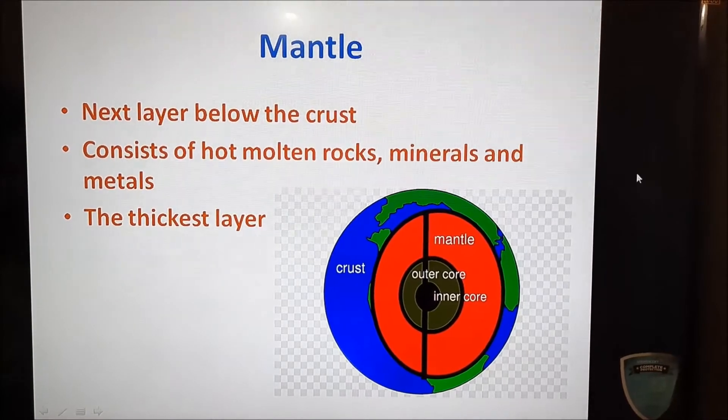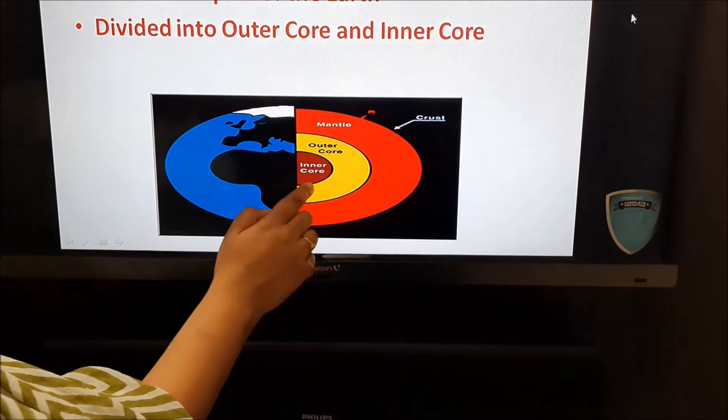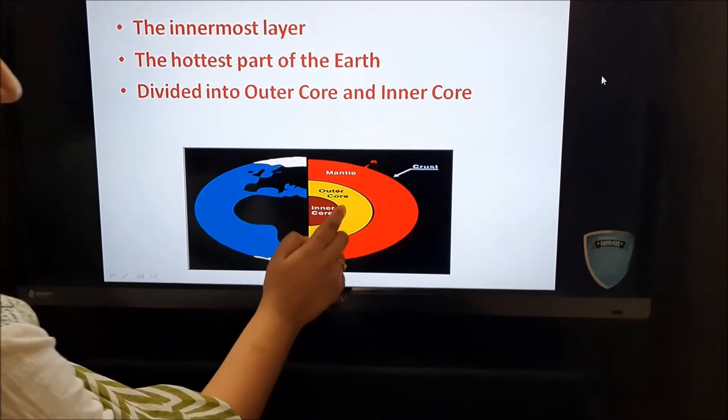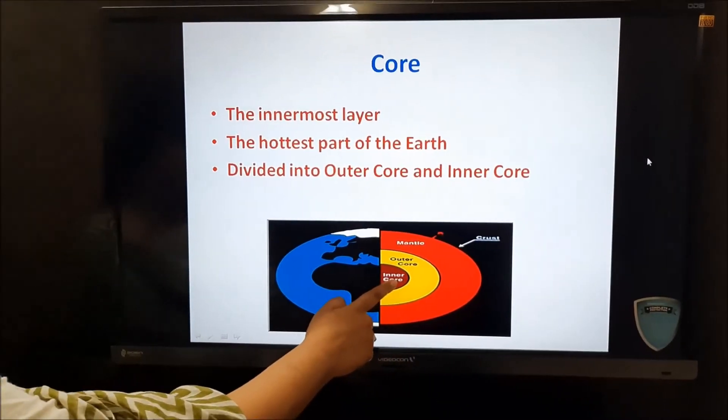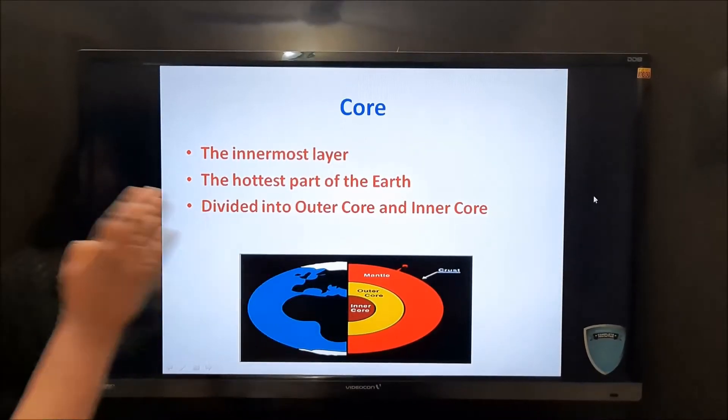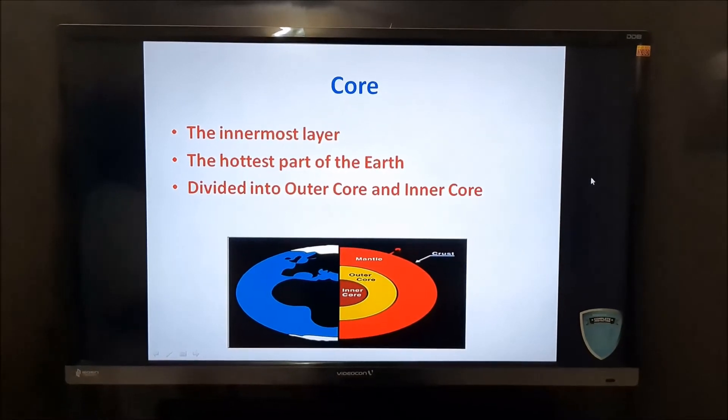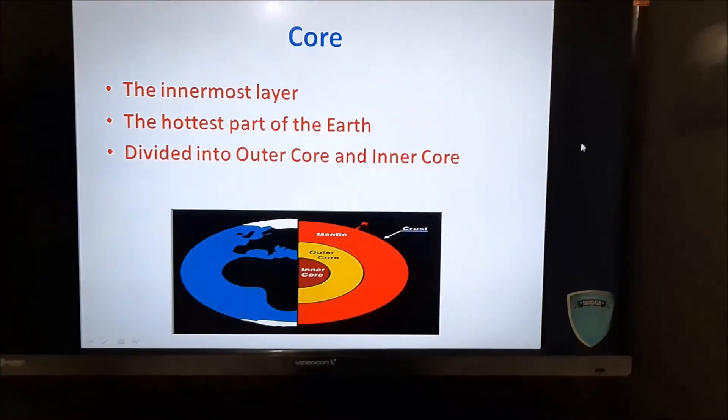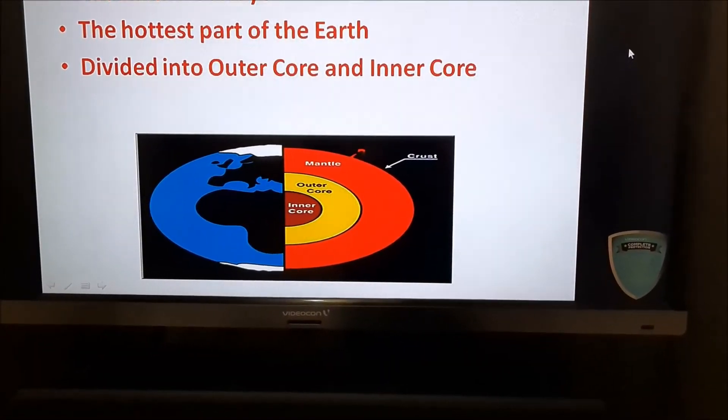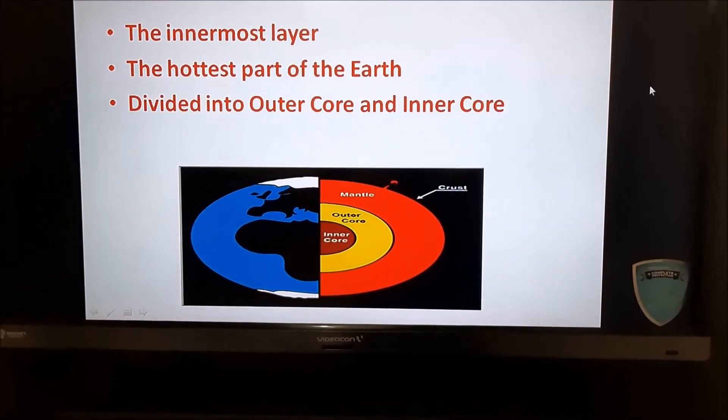Moving on to the next layer, core. Core is the innermost layer, which you all can see here. This is the innermost layer. Now the core is divided into two parts, which is the outer core and the inner core. This is also the hottest part of the Earth. Now the outer core consists of hot liquid substances and the inner core consists of solid state of substances.